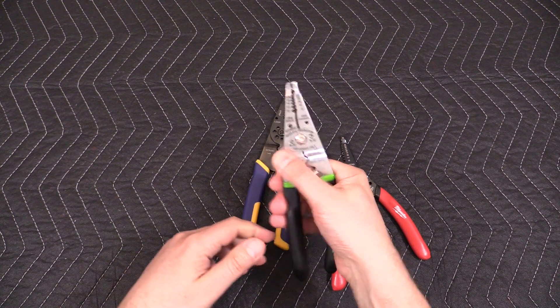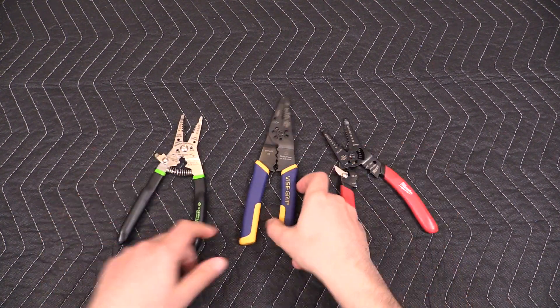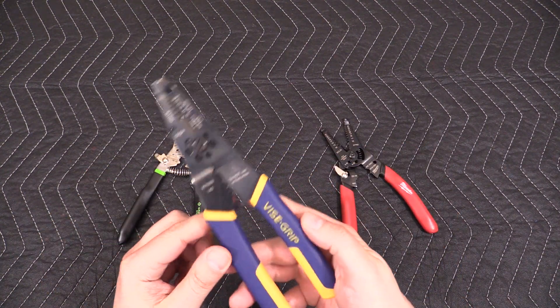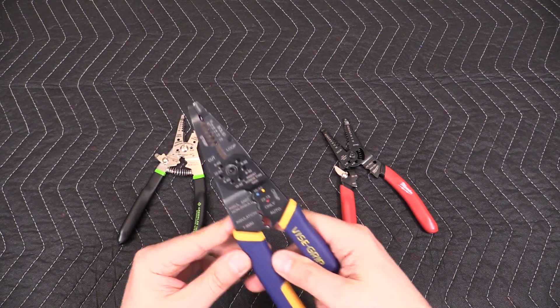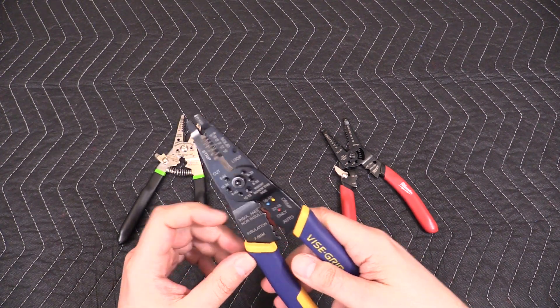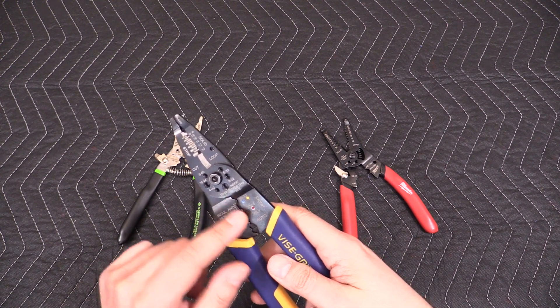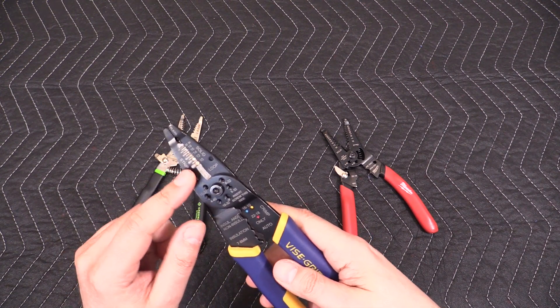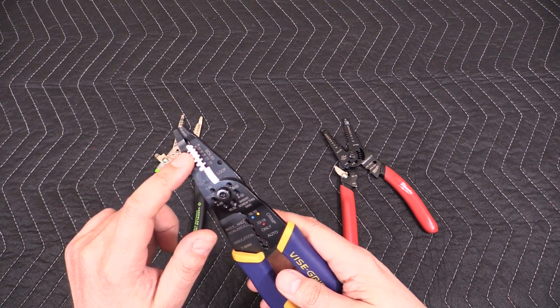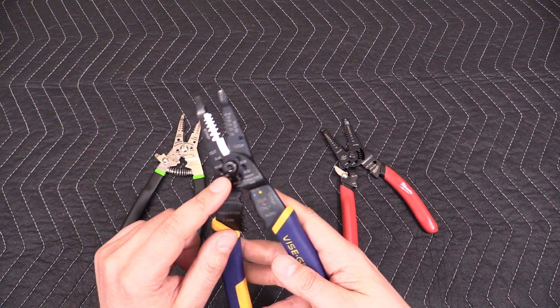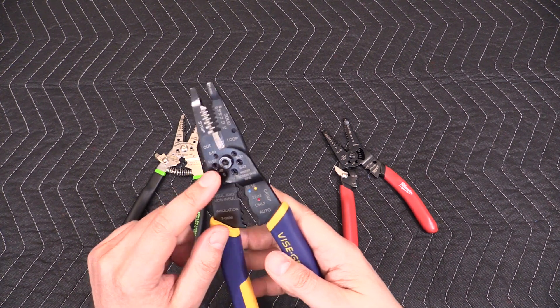So this is the Irwin vice grip one. It has pretty much every feature that you would want in a wire stripper. It's got insulated and non-insulated crimper of different sizes, stripper from 10 solid to 22 gauge, and also got all kinds of bolt cutting holes right here and a looper.